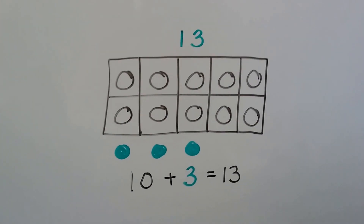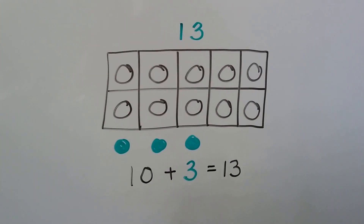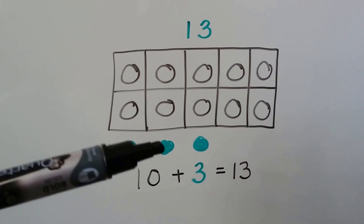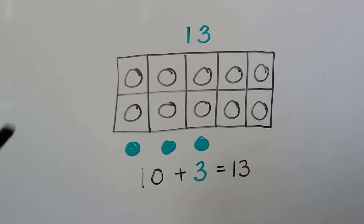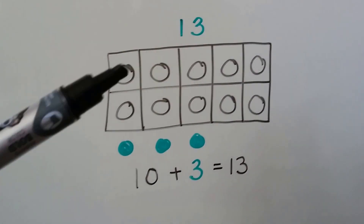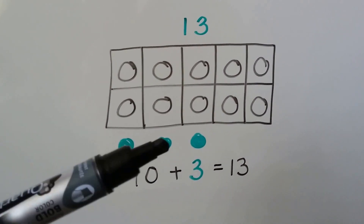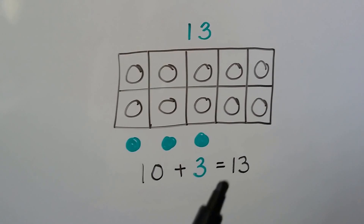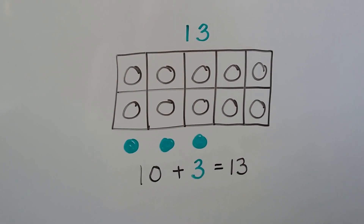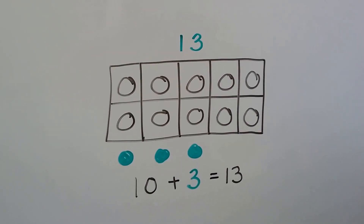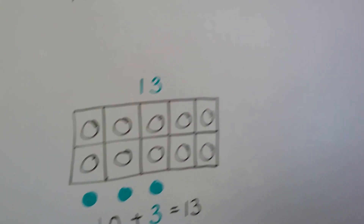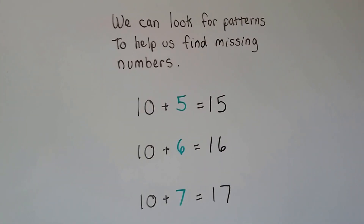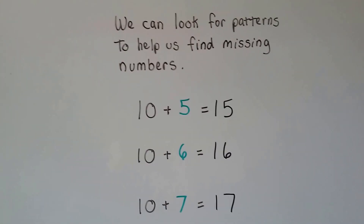If we needed a sum of 13, we could use our 10 frame and three more circles: 10, 11, 12, 13. 10 plus 3 equals 13. We can also look for patterns to help us find missing numbers.